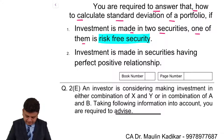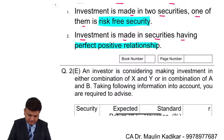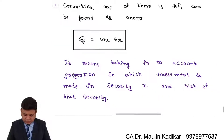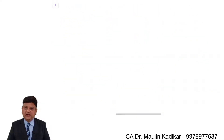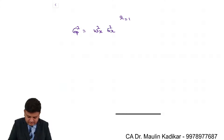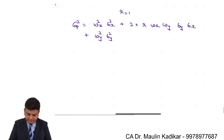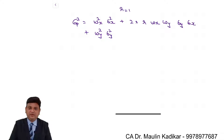Second part of the question: if investment is made in securities having a perfect positive relationship — that is, correlation coefficient equal to 1 — how do we compute σ_p? The variance formula is σ_p² = w_x² · σ_x² + w_y² · σ_y² + 2 · r · w_x · w_y · σ_x · σ_y. Now the correlation coefficient between both securities is 1.